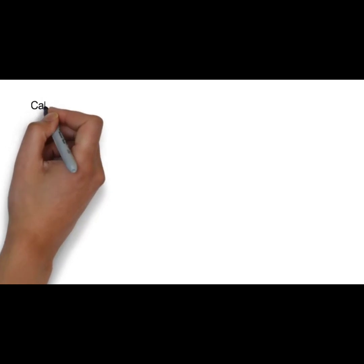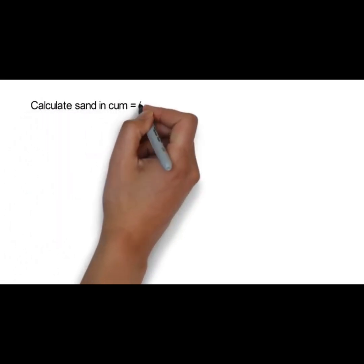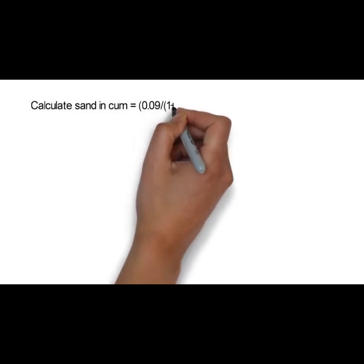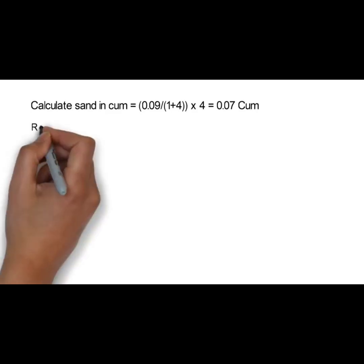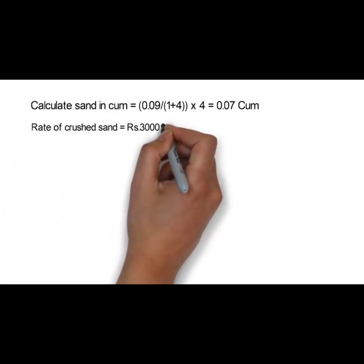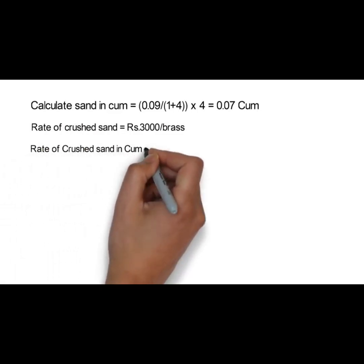Now we will calculate sand in cubic meters. The formula is 0.09 ÷ (1 + 4) × 4 = 0.07 cubic meter, because sand is 4 times the cement in the proportion. We will consider the rate of crushed sand as 3,000 rupees per brass, which means 3,000 ÷ 2.83 = 1,060 rupees per cubic meter.